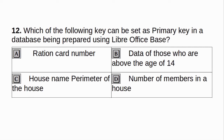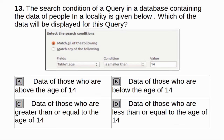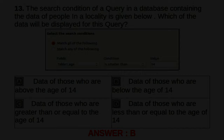Which of the following key can be set as primary key in a database being prepared using LibreOffice Base? A. Ration card number. B. Data of those who are above the age of 14. C. House name/perimeter of the house. D. Number of members in a house. Answer: A. Ration card number. The search condition of a query in a database containing the data of people in a locality is given below. Which data will be displayed for this query? Answer: B. Data of those who are below the age of 14.